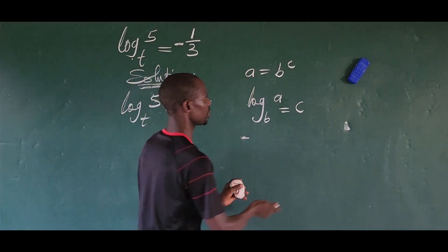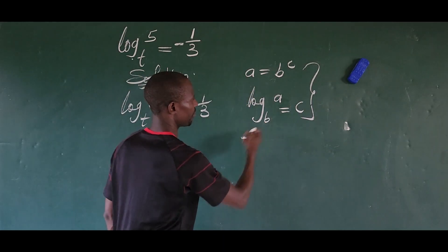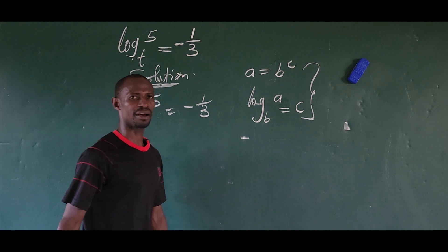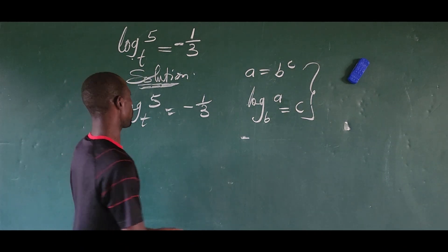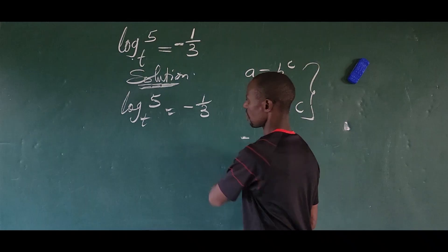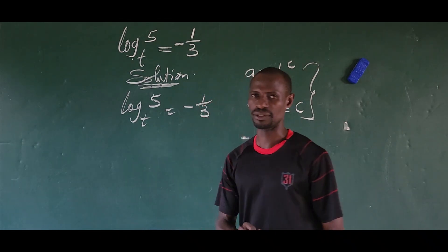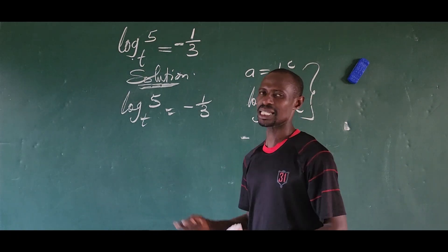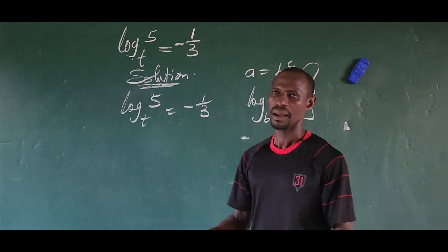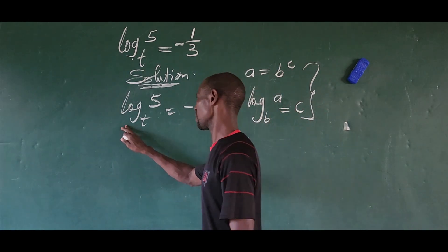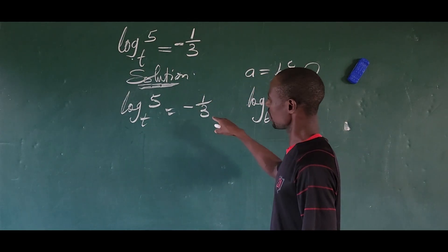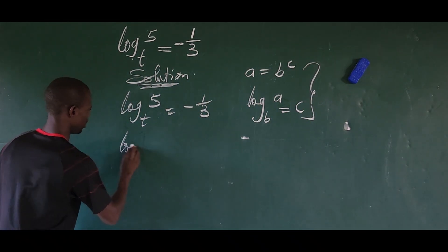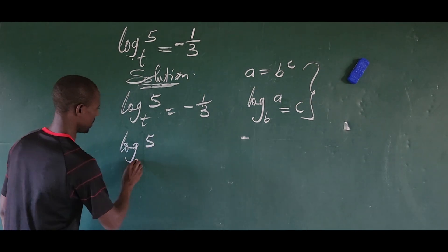So there is a strong relationship between indices and logarithmic form. This expression and that expression are the same thing in logarithmic form. We can rewrite this in that format in order to get our t. But that is not the approach I'm going to use. What I want to do here is introduce log base t.